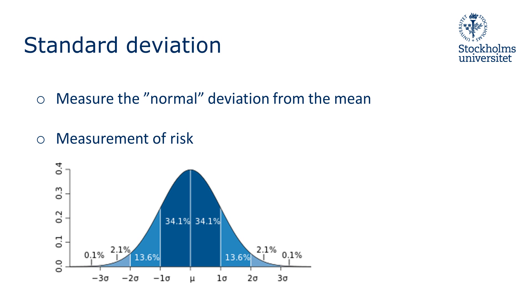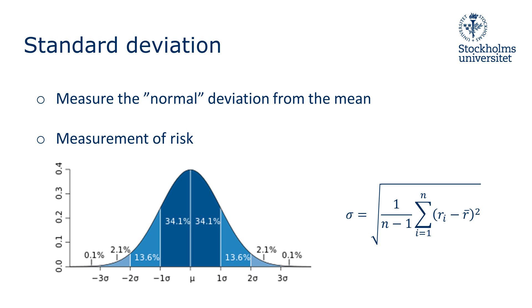The standard deviation is calculated by taking the square root of the variance, which is calculated by adding up all the squared deviations from the mean and dividing these by the number of observations minus 1.